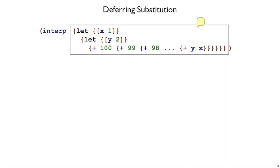The key to doing that, to making this have good time complexity, is to not actually perform the substitution, but just keep track of the substitutions we would have done if we did it right away.